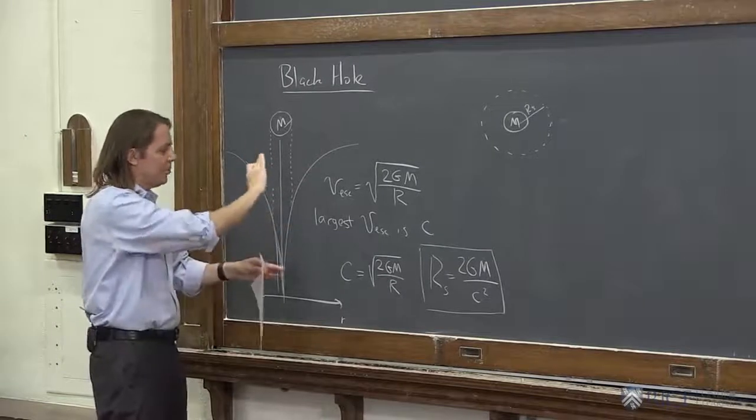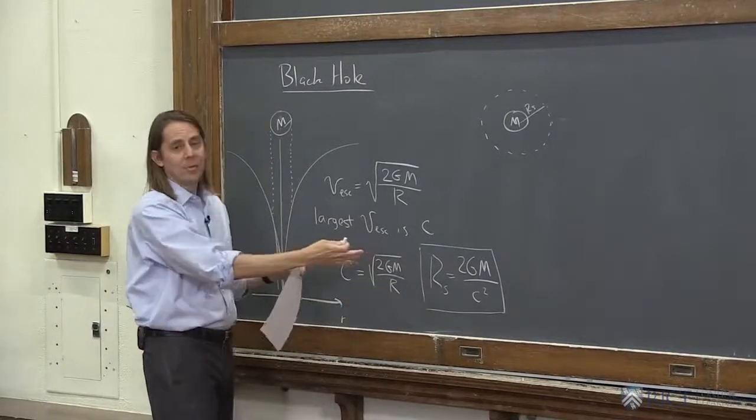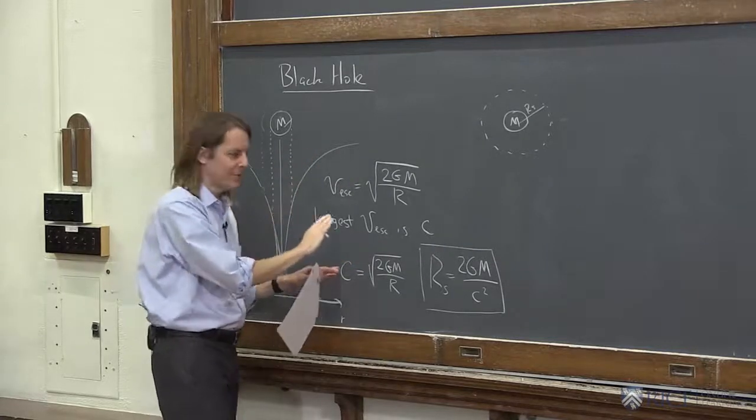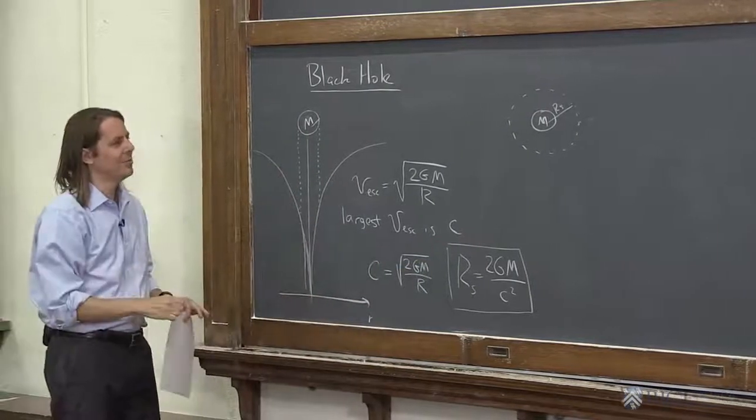Now, there are much more complicated field theory ways to calculate this quantity. And in the end, you get the same thing. So this is just a lucky happenstance that the simple freshman physics calculation gives you this number. There's a lot more to black holes than this, is what I want to make clear.